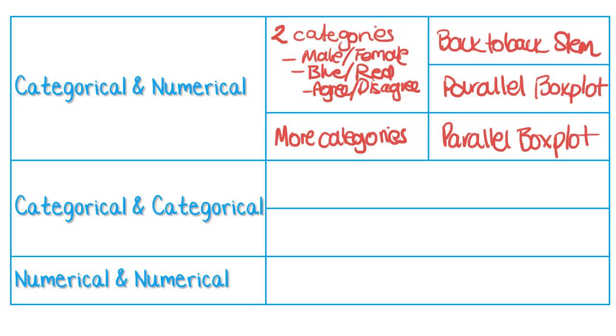Now we're going to look at how you represent when you have two categorical variables. So, for example, male, female, and also your voting preference, Labour, Liberal, Greens, etc.